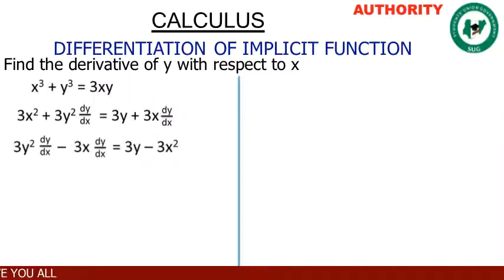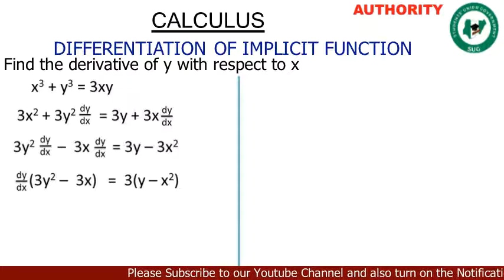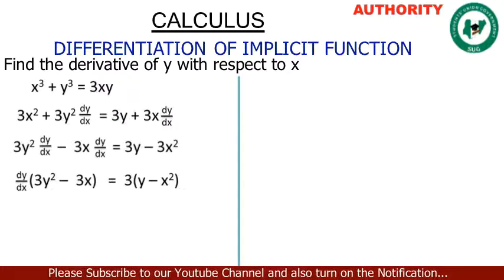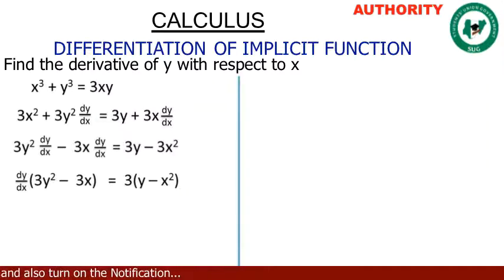Now let's factor out dy/dx. Factoring dy/dx from 3y squared dy/dx minus 3x dy/dx gives dy/dx times the bracket (3y squared minus 3x), equal to 3y minus 3x squared. On the right side we can also factor out 3, giving 3 times (y minus x squared).